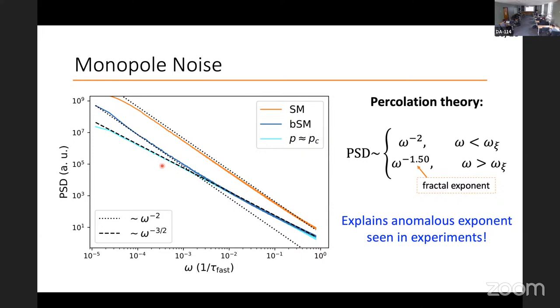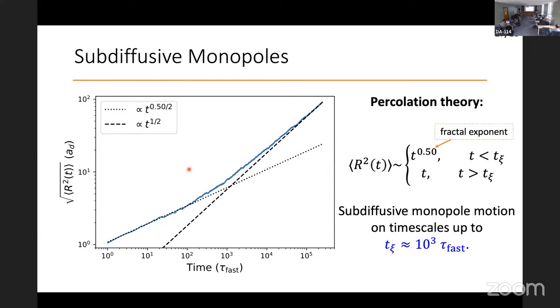At that point, we can find that the behavior at low frequency in the BSM case is matching this prediction from percolation theory. It goes as omega to minus 2. Whereas at higher frequencies, we get this fractal exponent of 1.5. In the SM case, we just have this conventional decay all the way. Whereas if we look at the percolation cluster with a random walker on it, we'll find noise that goes with this fractal exponent at all frequencies.